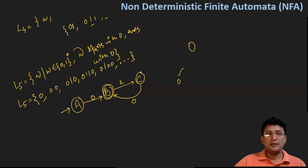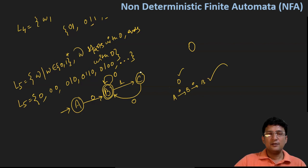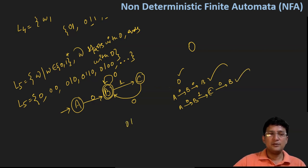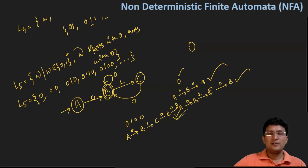We should have the loop of zero at state B. What if I get 'zero zero'? I start at A, with zero I move to B, with another zero I remain at B, which is the final state. What if I get 'zero one zero'? From A, with zero I move to B, with one I go to C, with zero I come back to B — which is the final state. Let's say 'zero one zero zero' should also be accepted: A → B (zero) → C (one) → B (zero) → B (zero), final state. This automata accepts all strings that start with zero and end with zero.